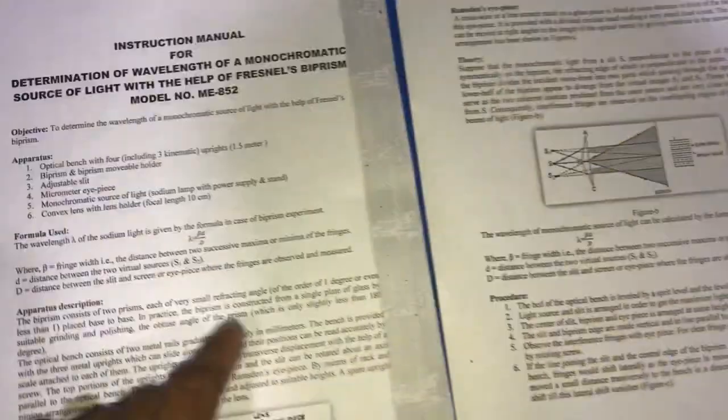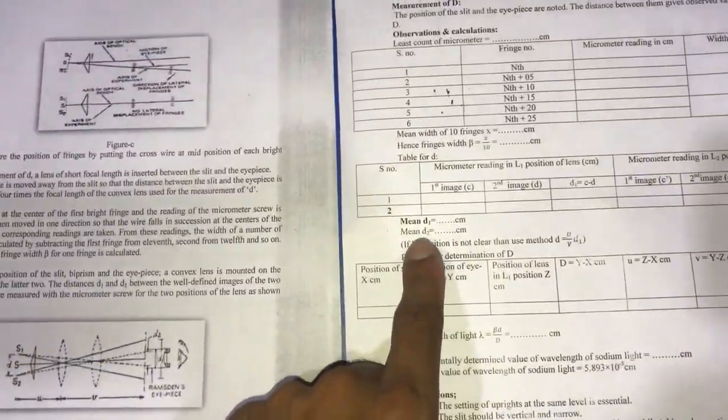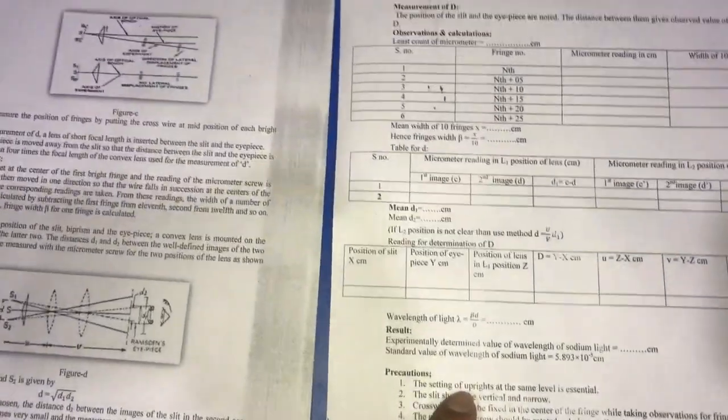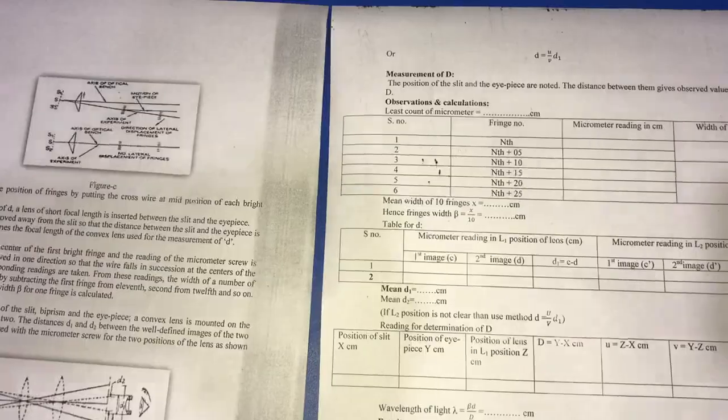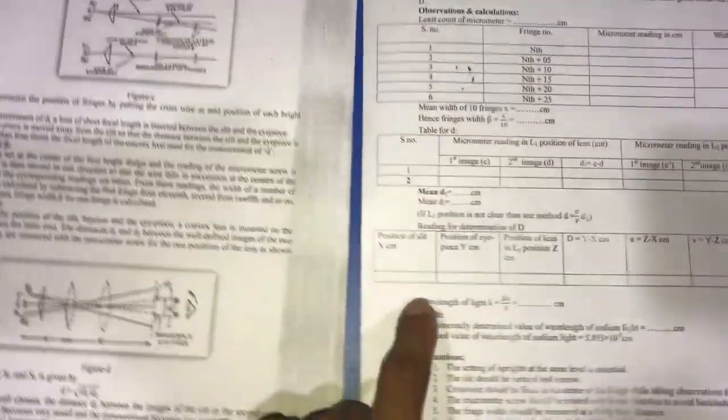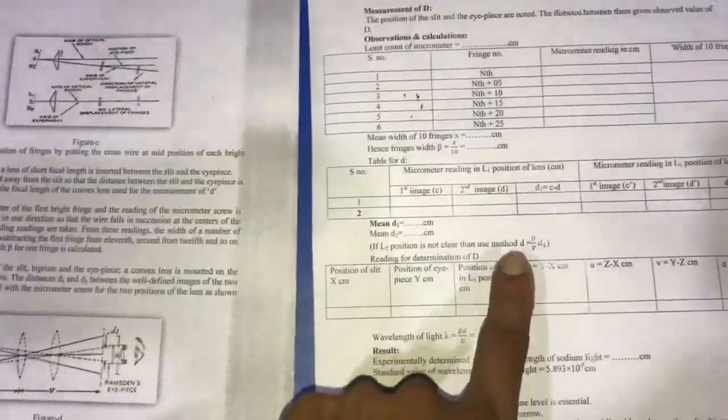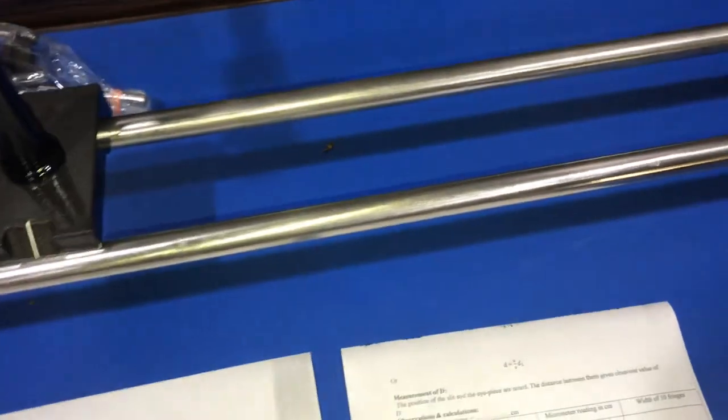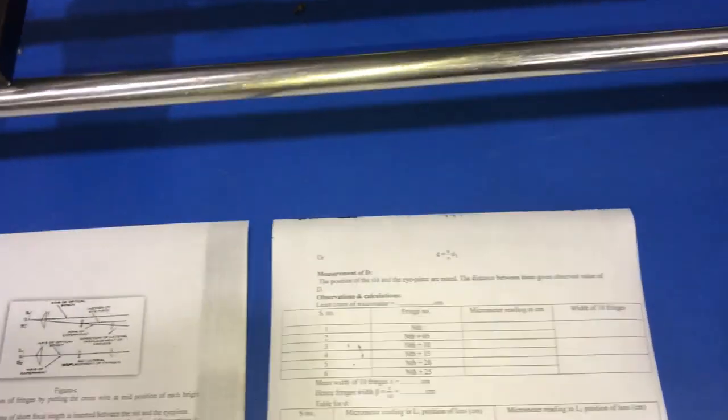After that we calculate the value of distance d by applying the formula: d equals square root of d1 into d2. We also calculate the value of d with the other method by calculating u and v. Now we measure the distance between eyepiece and slit.